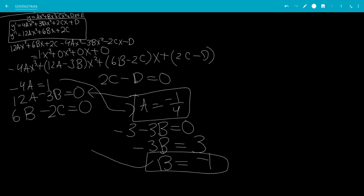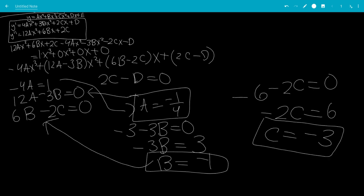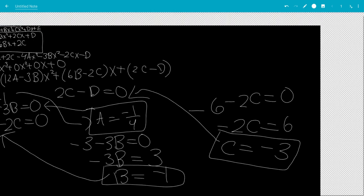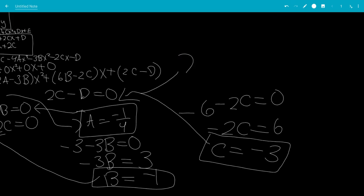So now plugging this into this equation for c, you get negative 6 minus 2c equals 0. So negative 2c equals 6 or c equals minus 3. Now finally, substituting this into the last equation. Let's put the result over here. 2 times negative 3 is minus 6 minus d equals 0. So d is minus 6.